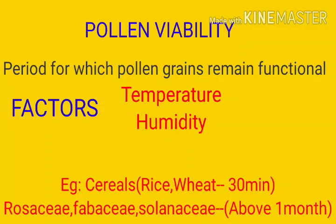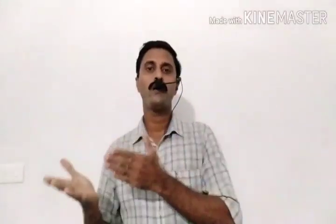For example, in some cereals like rice and wheat, the viability may be only 30 minutes. But in some families like Rosaceae, Leguminosae or Fabaceae, and Solanaceae, the viability may be retained for above one month. So the lifetime or period for which pollen grains remain functional is called the viability period.